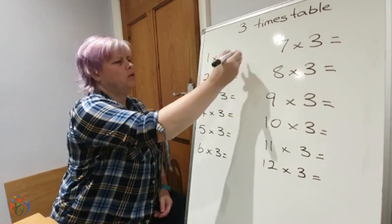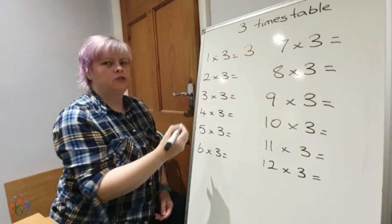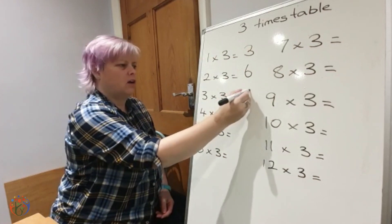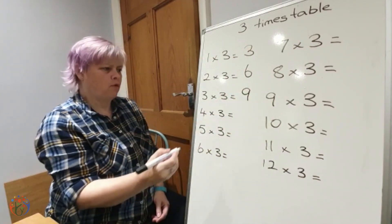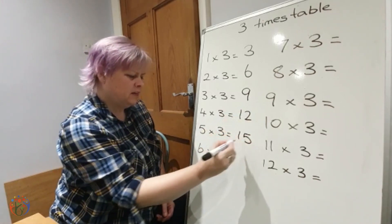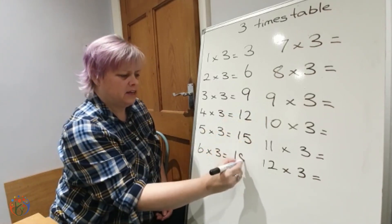So we've got 1 three is 3, 2 threes are 6, 3 threes are 9, 4 threes are 12, 5 threes are 15, 6 threes are 18,